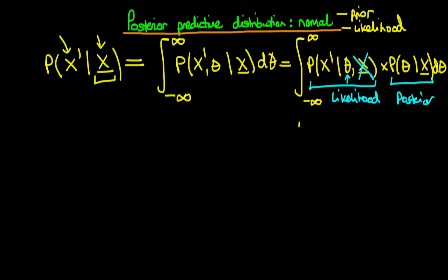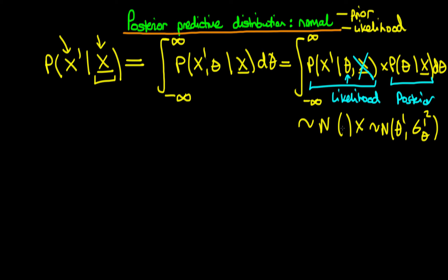We know in this case that the likelihood is itself normal. And we also know the form of the posterior density — the posterior density is normal with a mean of theta-primed and a variance of sigma-squared-primed of theta. We could just do this integral directly, and that would give us our posterior predictive distribution straight away. We should guess that if we're multiplying two normals together, we should expect to get something normal out in the end — and that's exactly what we get.